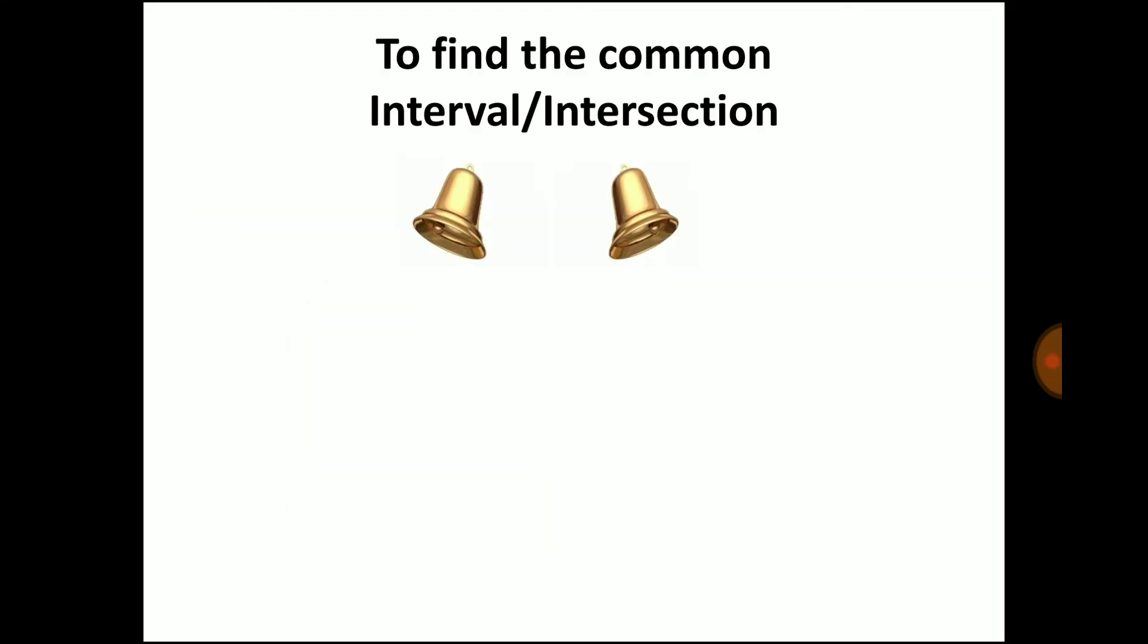Now the second example, to find common interval or intersection. In a locality there are two bells, bell 1 and bell 2. Both the bells ring together at 8 AM. Bell 1 rings at the interval of 4 minutes and bell 2 rings at the interval of 5 minutes. At what time both of them ring together?